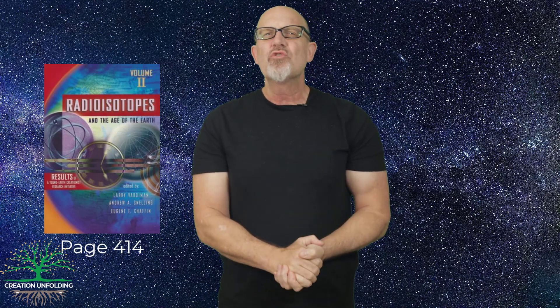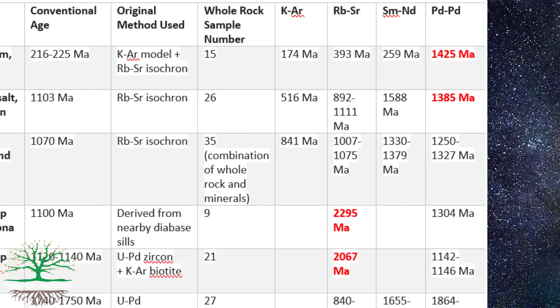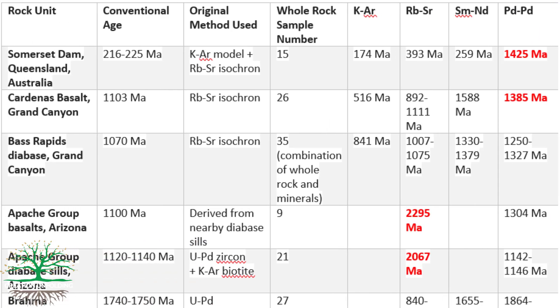Back in 2005, a group of creationist scientists known as the RATE Group sent hundreds of rock samples to conventional labs for dating, wanting to know if radioisotope ages were concordant or discordant. This graph is a simplified version of their research. The rock unit is given on the left, with its age from the scientific literature in the next column, then the dating method, then the number of samples. The last four columns show the ages determined by the conventional labs. The creationist scientists organized things so that the same rock unit was dated using four different methods.